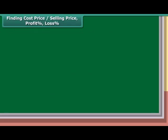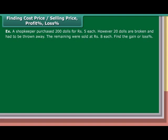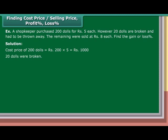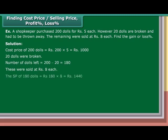Finding Cost Price, Selling Price, Profit and Loss percentage. Example: A shopkeeper purchased 200 dolls at Rs. 5 each. However, 20 are broken and had to be thrown away. The remaining were sold at Rs. 8 each. Find the gain or loss percentage. Solution: Cost price of 200 dolls equals Rs. 200 into 5, which equals Rs. 1,000. Number of dolls left equals 200 minus 20, which is 180. Selling price of 180 dolls equals Rs. 180 into 8, which equals Rs. 1,440.